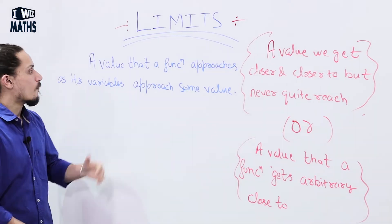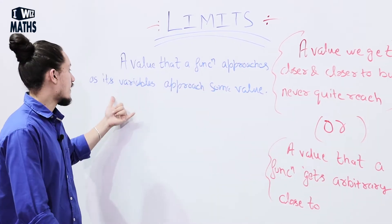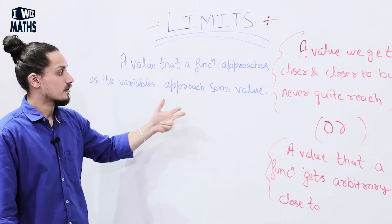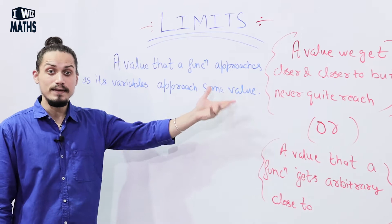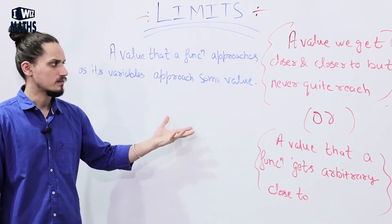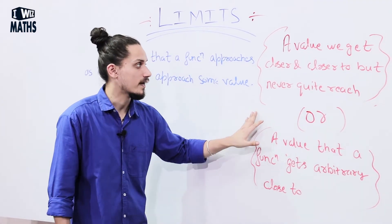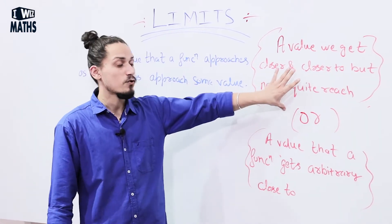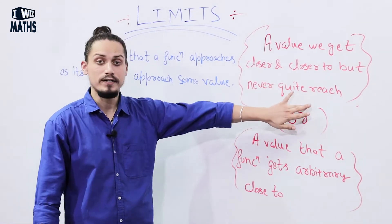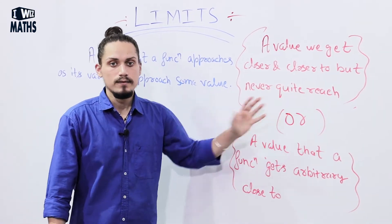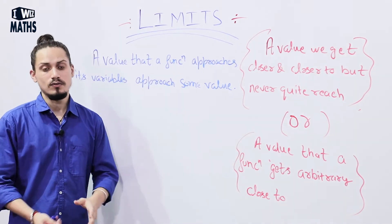A value that a function approaches as its variable approaches some value is called the limit of that function. We can also say that it's a value we get closer and closer to but never quite reach. You will not get anywhere with just this definition, so let's look at it mathematically.